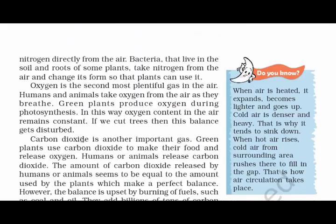Now let's talk about how these gases came into existence. Nitrogen comes directly from the air. The bacteria that live in the soil and roots of some plants take nitrogen from the air and change its form so that plants can use it. Oxygen is the second most plentiful gas in the air. Humans and animals take oxygen from the air as they breathe, while green plants produce oxygen during photosynthesis, keeping the oxygen content in the air constant. If we cut trees, this balance gets disturbed.